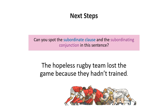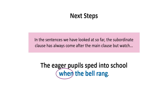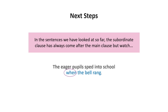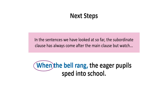'The hopeless rugby team lost the game because they hadn't trained.' The main clause is 'the hopeless rugby team lost the game' — that makes sense on its own. The subordinate clause is 'because they hadn't trained' and the subordinate conjunction is 'because', always at the beginning of the subordinate clause. Note that the subordinate clause has come after the main clause in all the examples so far, but we can also put it the other way around.